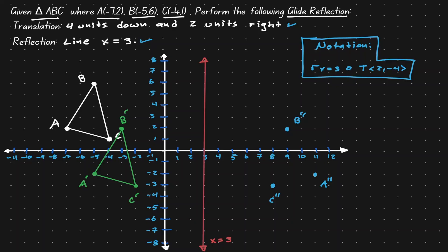Let's connect those final points. Here we have our final result: triangle A'', B'', C'' is the result of a glide reflection on triangle ABC.